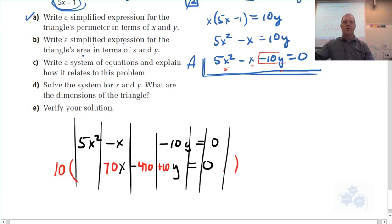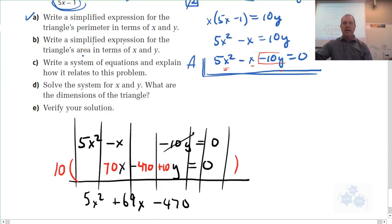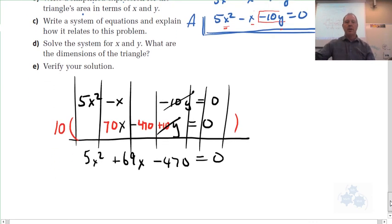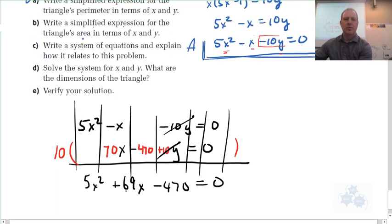When I add these up, I get 5X squared. I get 70 minus 1 is plus 69X. I get a 0 minus 470. So, that's negative 470. And negative 10 and positive 10Y eliminated. So, I know this is seeming like it's a long time here. But now I have a quadratic that I can use the quadratic formula to solve or factor in whatever. So, where are we at here before we finish that?